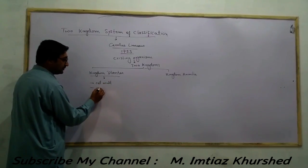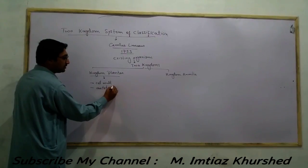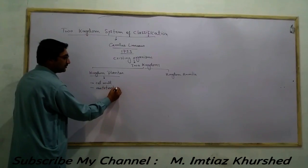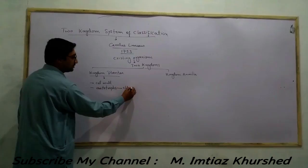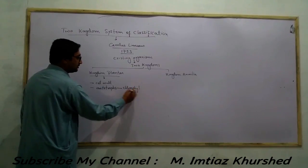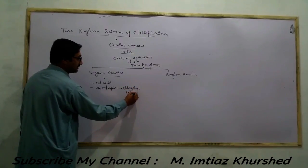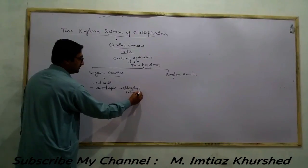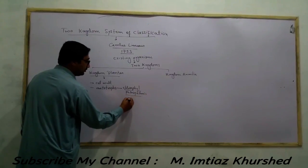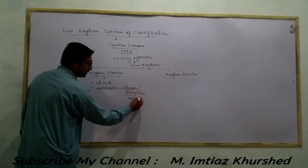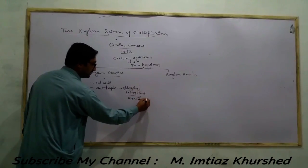The organisms in Kingdom Plantae are autotrophs. Autotrophs means the plant contains chlorophyll, and using chlorophyll they perform photosynthesis. Photosynthesis means they can make their own food.